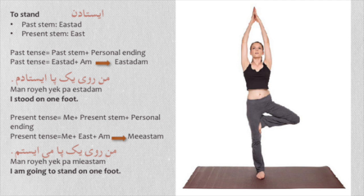For the past tense, you need the past stem 'istad' plus 'am', the personal ending for I: 'istaadam'. Man ruye yekpa istaadam — I stood on one foot. For the present tense, you need 'me' before the present stem, then the personal ending: 'me' plus 'ist' plus 'am' — mi istam. Man ruye yekpa mi istam — I am going to stand on one foot.